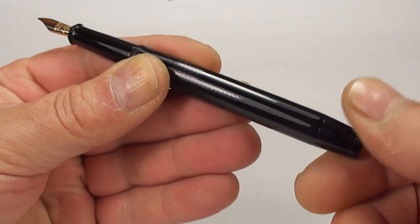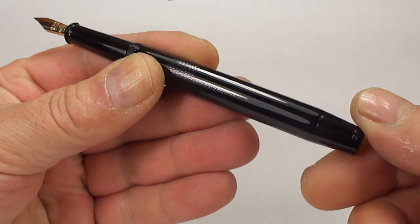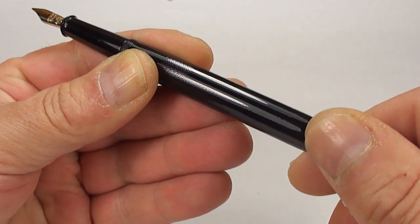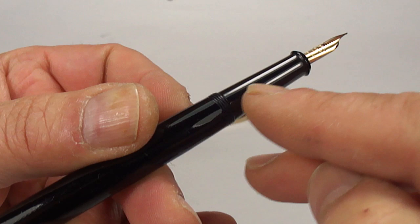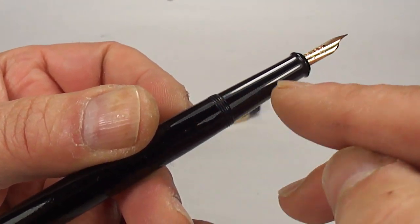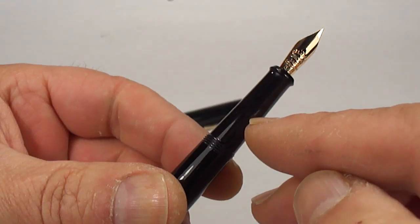And then, in effect, what you'll actually do, in the direction of the arrow, you'll simply give it a half turn. And what that'll do is open the shut-off valve in there and help the ink flow when you're actually writing.